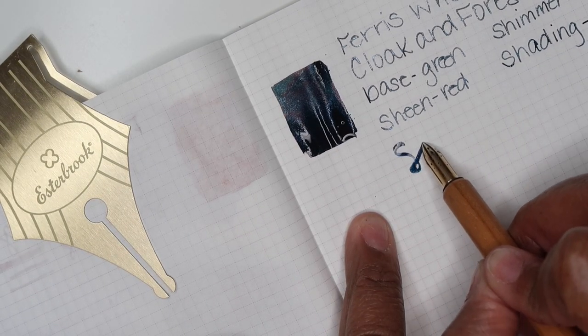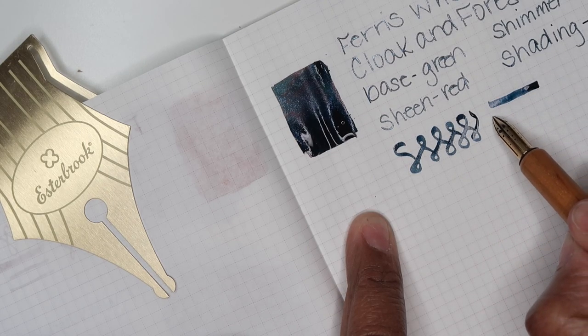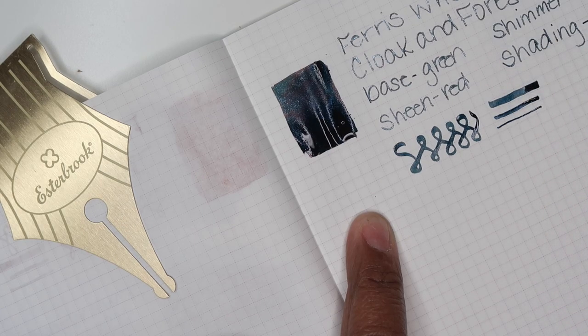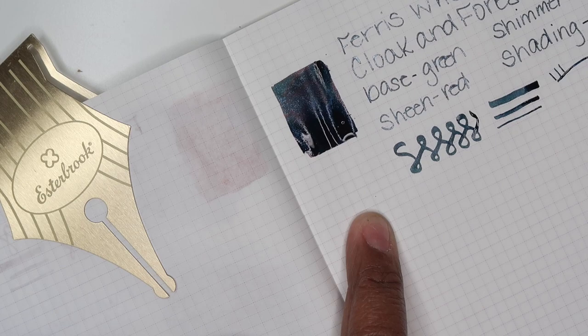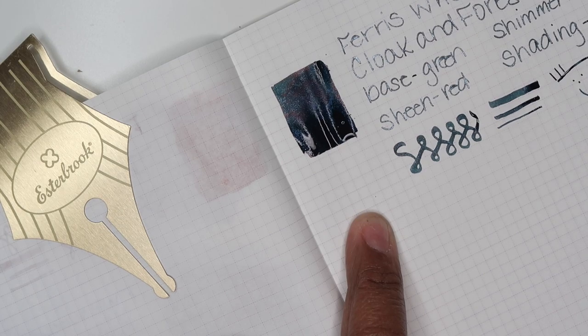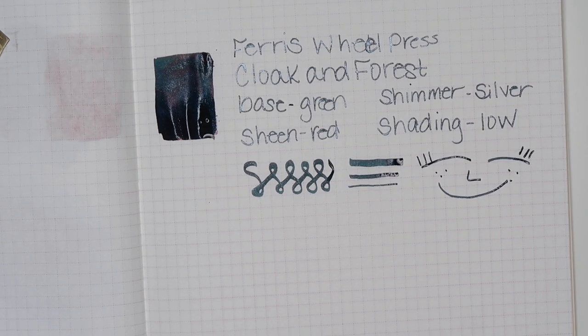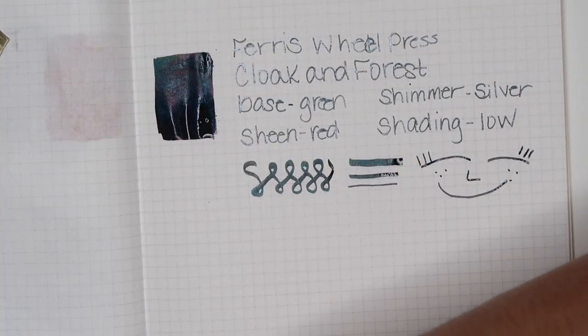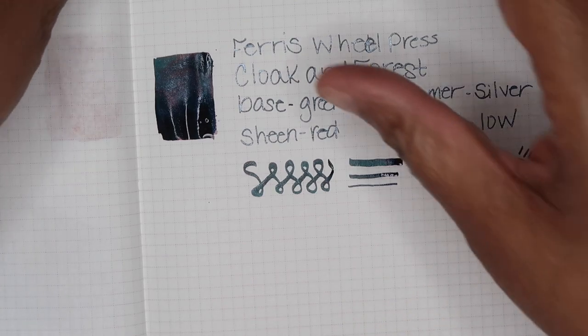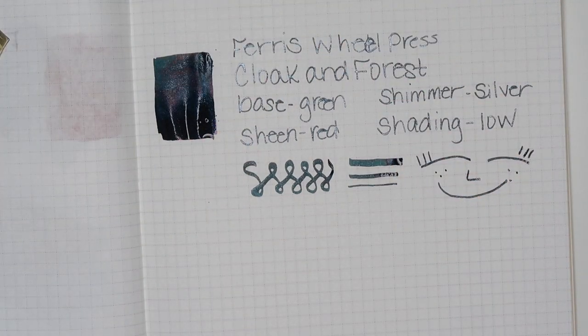Okay. So let's make a few swirlies. Again, if you hear my son, I'm sorry. He is playing his game, but that is cloak and forest. And then this is my water afterwards. It's like a light blue tint.